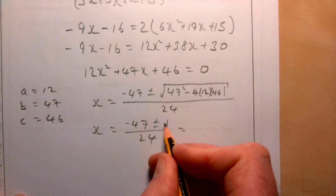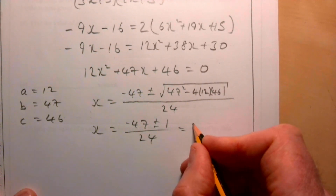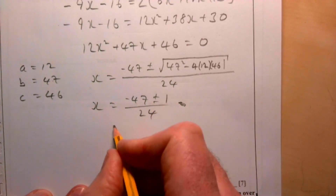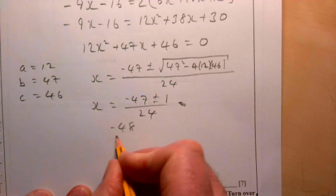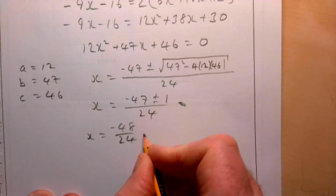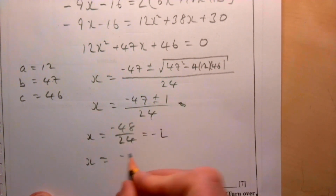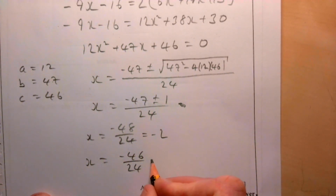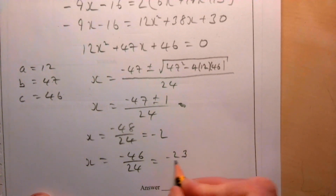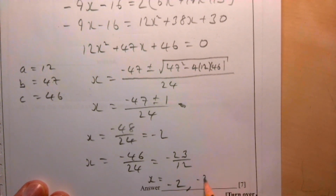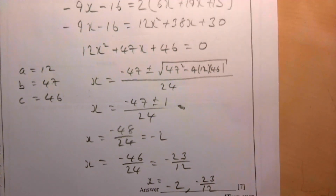So x equals minus 47 plus or minus 1, all over 24. That gives x equals minus 46 over 24, which is minus 23 over 12, or x equals minus 48 over 24, which is minus 2. The solutions are x equals minus 2 or x equals minus 23 over 12.